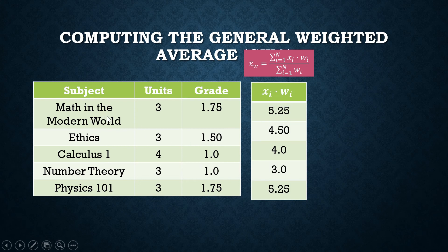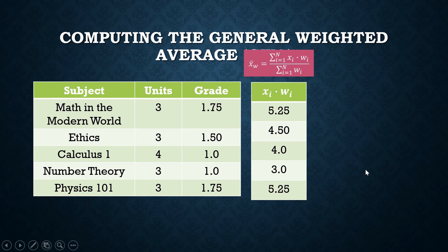For math in the modern world, your grade is 1.75. That is your x sub i times the weight of that subject, which is 3. 1.75 times 3, that's 5.25. For ethics, your grade is 1.5. That's your x sub 2. You multiply it by the weight of ethics, which is 3 units again. 1.5 times 3 is 4.5. You will do this for all the subjects.